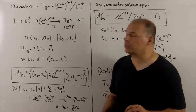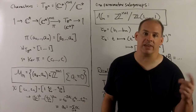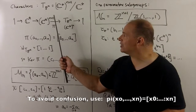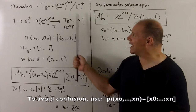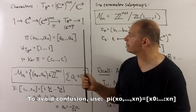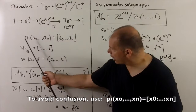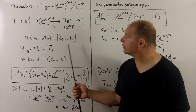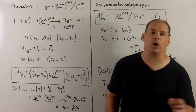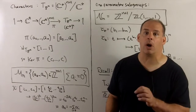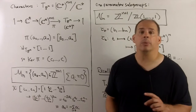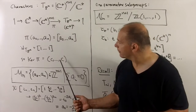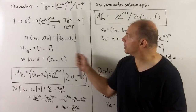So we're taking our non-zero points and sending them to projective classes. The kernel of this map: the identity for our torus is just the class [1:1:...:1], so the kernel consists of all scalar multiples of the vector (1,1,...,1). That gives our description of the torus as C*^(n+1) modded out by the diagonal C*.